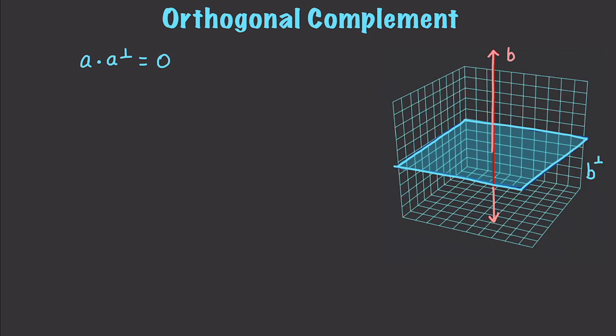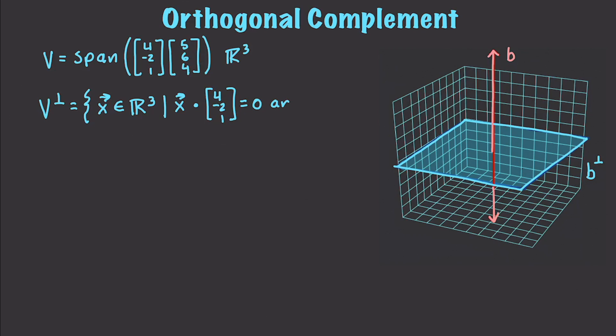So, let's look at an example here. Let's say we have V, which is a span of 4, negative 2, and 1, as well as 5, 6, and 4. So, this is a two-dimensional plane in R3. Well then, V perpendicular is going to be represented as all vectors in R3, where X dotted with 4 minus 2, 1 being equal to 0, and X dotted 5, 6, 4 will be equal to 0.